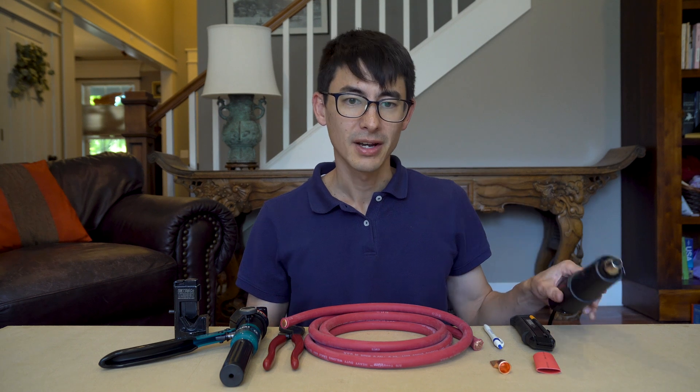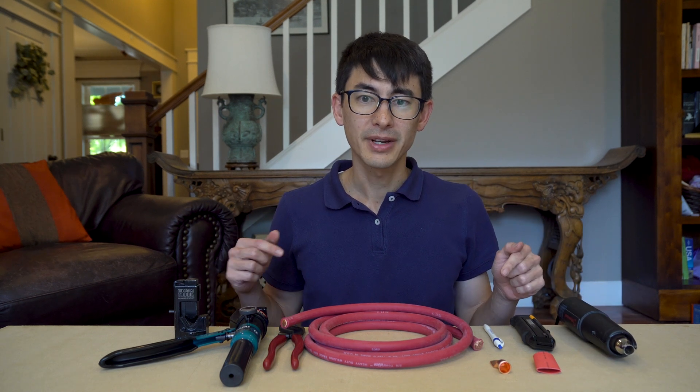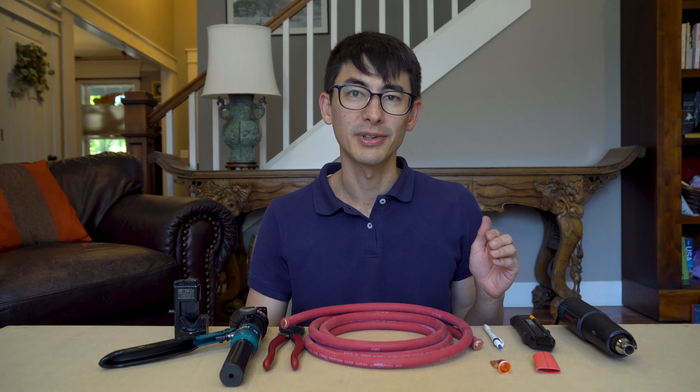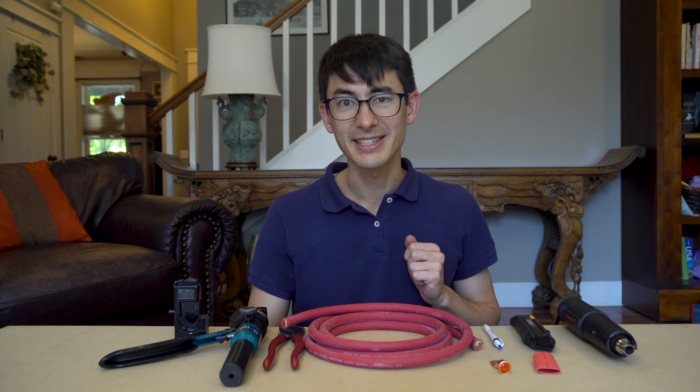And lastly, we have a heat gun to activate the heat shrink over the wire. For all of these materials, we'll put a link to them in the description below, or you can find a product list on our blog at asobolife.com. Let's get into the details.